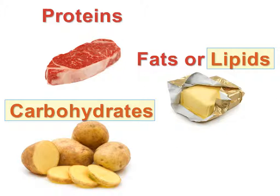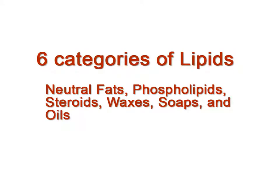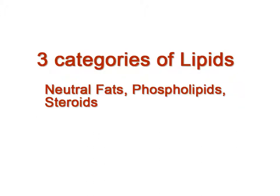Remember that the scientific term for fat is lipid. There are six main groups of molecules that are categorized as lipids: the neutral fats, phospholipids, steroids, waxes, soaps, and oils. For the purpose of this course, though, we are only concerned with the first three — the neutral fats, the phospholipids, and the steroids.